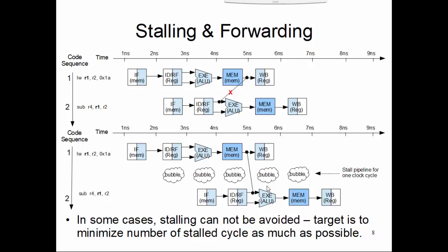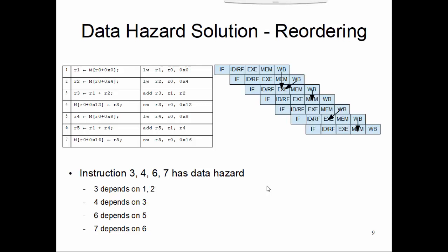Let us take a detailed example. We will take this one, which has seven different instructions, and in this example we will also study something like a reordering solution for data hazard situations. This example loads two data values from memory and uses both in an addition operation, then stores that result to memory, then loads another value and uses it in another addition, and finally stores that data to memory.